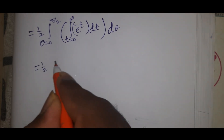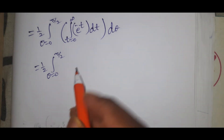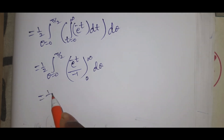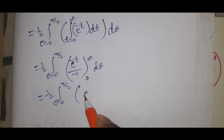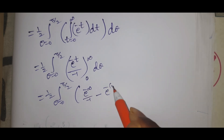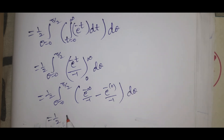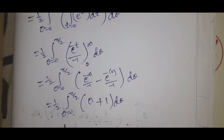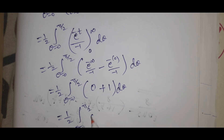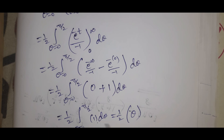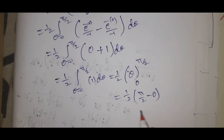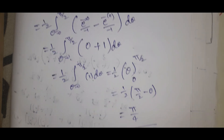That equals 1 by 2, integral theta equal to 0 to pi by 2, result is 1, so 1 d theta. This equals 1 by 2, theta evaluated from 0 to pi by 2. That gives 1 by 2 into pi by 2 minus 0, which is 1 by 2 into pi by 2, equal to pi by 4. This is the solution.